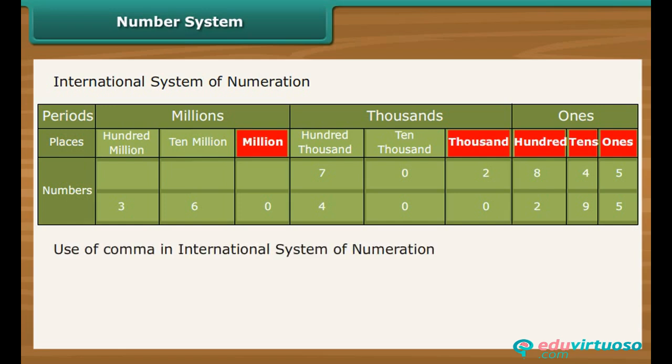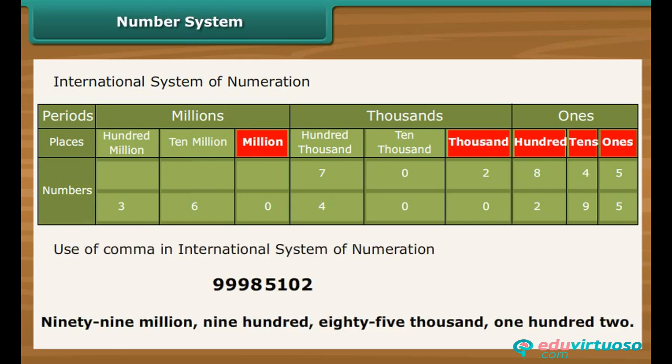Commas are used to mark thousands and millions. It comes after every three digits from the right. The first comma marks thousands and the next comma marks millions.